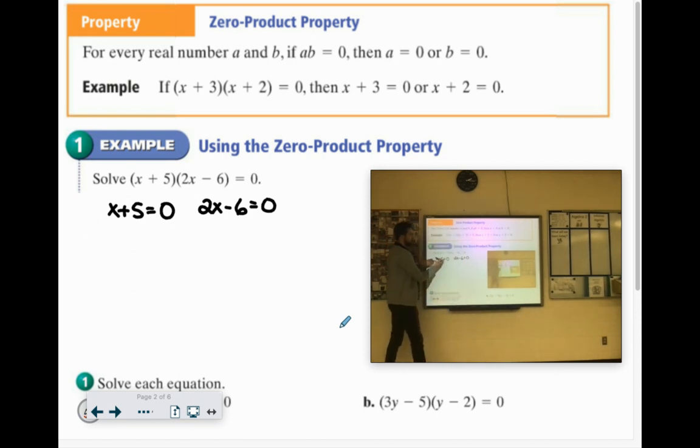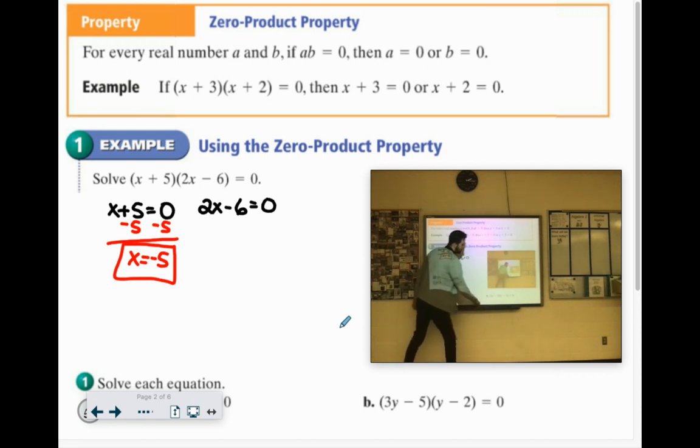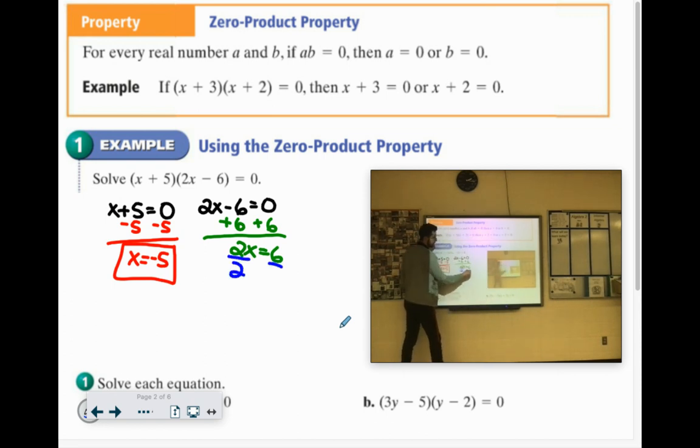So let me solve these equations. x plus 5 equals 0. We subtract 5 from both sides. We get x equals negative 5. We're going to have two solutions here, because we're also going to solve the right part. 2x minus 6 equals 0. We would add 6. 2x equals 6. And then we would divide by 2. We get x equals 3.